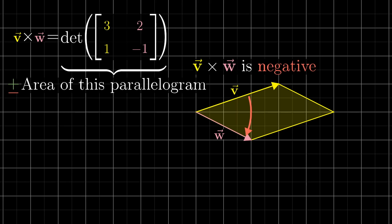What's more, if v is on the left of w, it means that orientation was flipped during that transformation, which is what it means for the determinant to be negative.